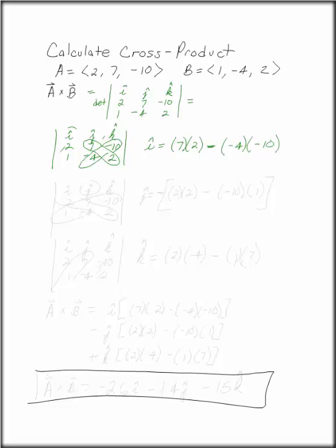And when I come to the J component, again, I'm going to write it down again. Cross out everything in the row and column, including J.